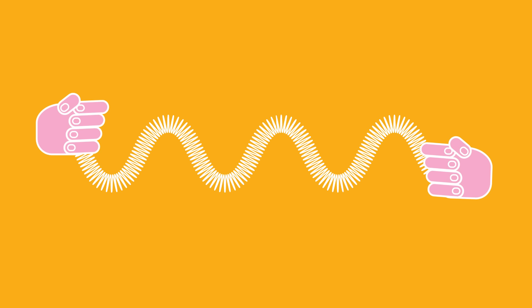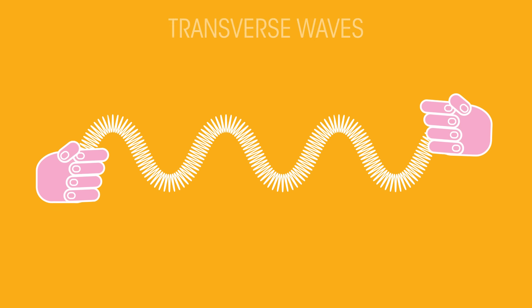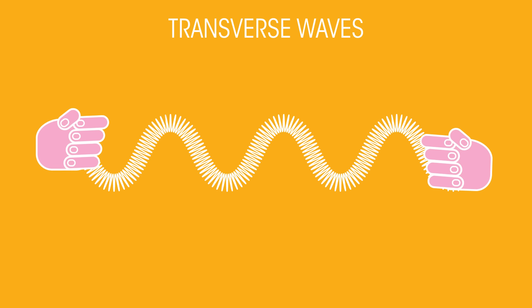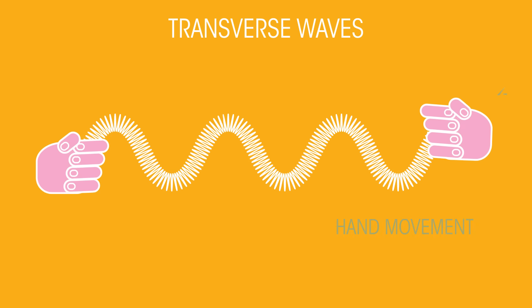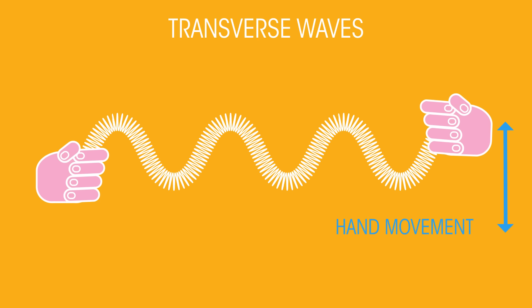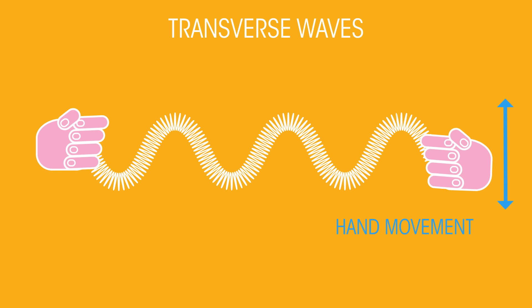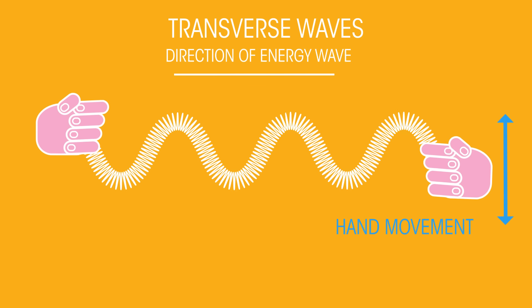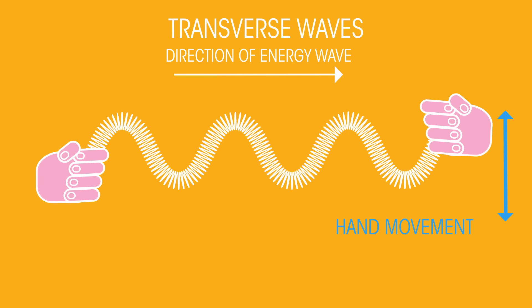Let's look at another type of wave — transverse waves. The hand moves up and down, as does the slinky, but the wave itself moves from left to right.